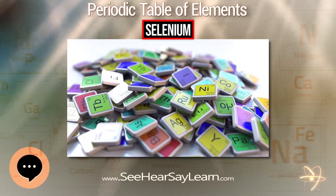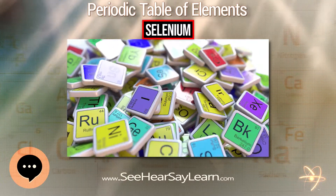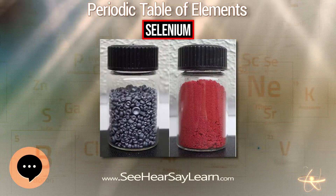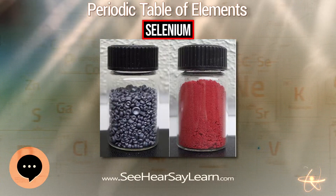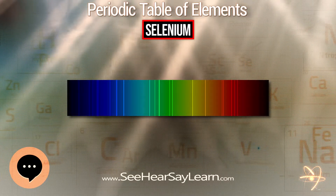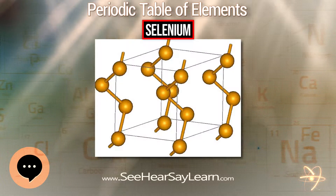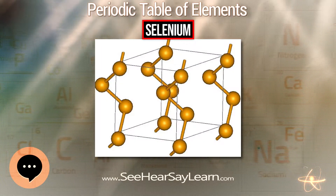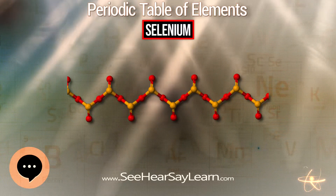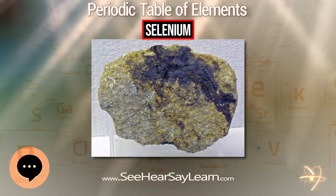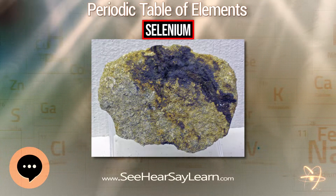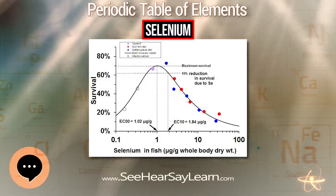Dietary selenium comes from nuts, cereals, and mushrooms; Brazil nuts are the richest dietary source. The U.S. recommended dietary allowance for teenagers and adults is 55 μg/day. Selenium as a dietary supplement is available in many forms, including multivitamin/mineral supplements, which typically contain 55 or 70 μg per serving. Selenium-specific supplements typically contain either 100 or 200 μg per serving. In June 2015, the U.S. Food and Drug Administration published its final rule establishing the requirement of minimum and maximum levels of selenium in infant formula.